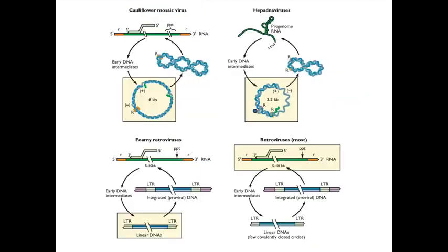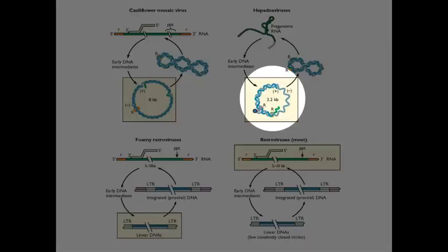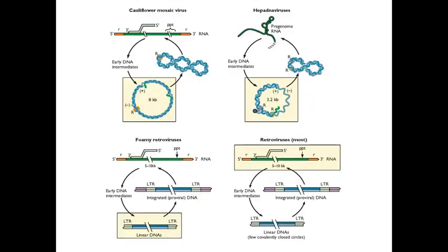So you end up with a partially double-stranded molecule which will get repaired when it goes into the next cell. What's the story with Hep B and retroviruses? Well, it turns out there are other viruses very much like these that help to fill the gaps. So here's Hepatitis B virus, and on this picture, what I've boxed is the genome that's in the virion.